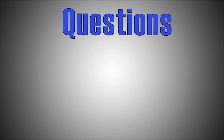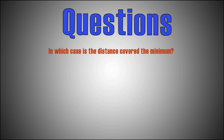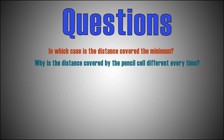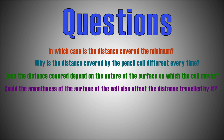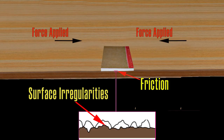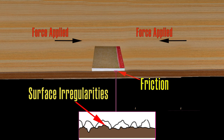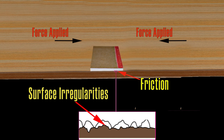Here are the questions that arise: In which case is the distance covered the minimum? Why is the distance covered by the pencil cell different every time? Does the distance depend on the nature of the surface on which the cell moves? Could the smoothness of the cell's surface also affect the distance traveled? Friction is caused by irregularities on the two surfaces in contact. Even surfaces that appear very smooth have a large number of minute irregularities, and these irregularities on the two surfaces lock into one another.